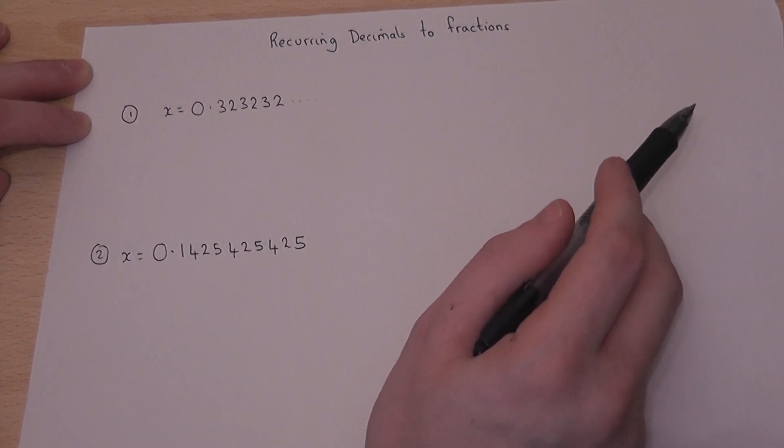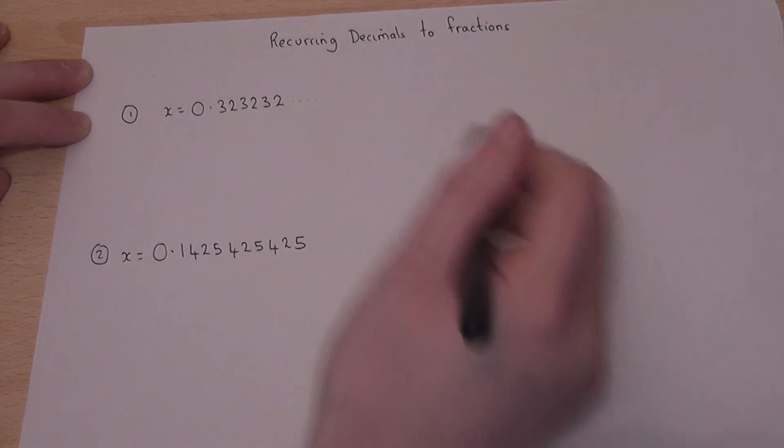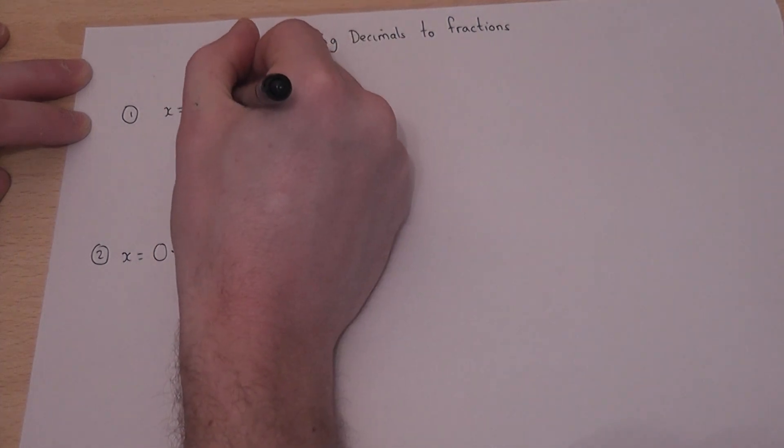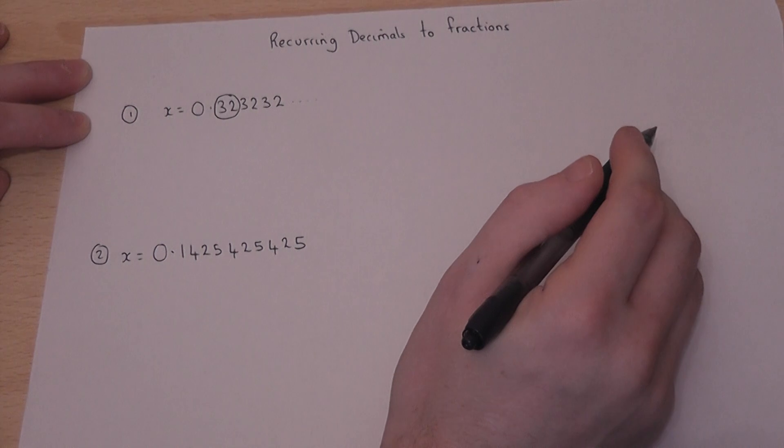Step 1 is to circle the recurring part. Question 1, that's 0.32.